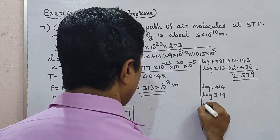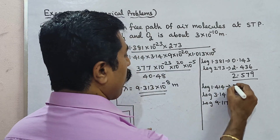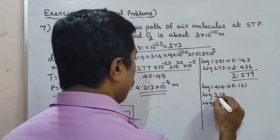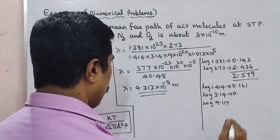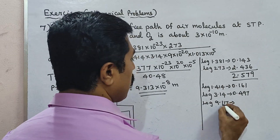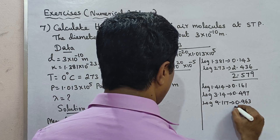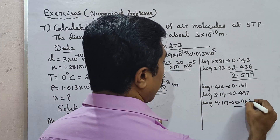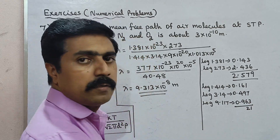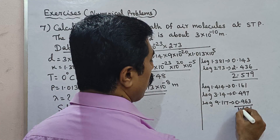For the denominator, we take log of 1.414, log of 3.14, log of 9, and log of 1.013. Multiplying factors give 9.117. Log 1.414 is 0.1504, log 3.14 is 0.4969. Adding up all denominator log values: 7 + 3 = 10, carry 1; 9 + 7 + 6 = 22, carry 2; result is approximately 1.6218.